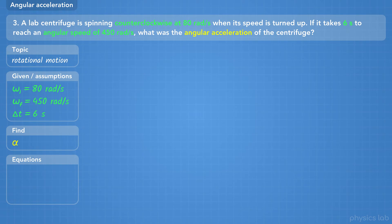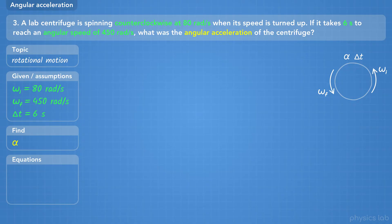Here we have a round object with the initial and final angular velocities in the counterclockwise direction, and we noted there's an angular acceleration and period of time between the two. We'll use the angular acceleration equation. However, we're not given delta omega — the change in angular velocity — directly. Instead, we're given the initial and final values, so we'll write out the substitution.